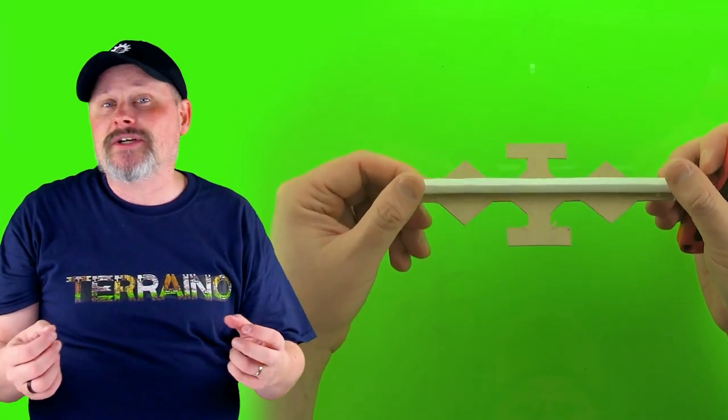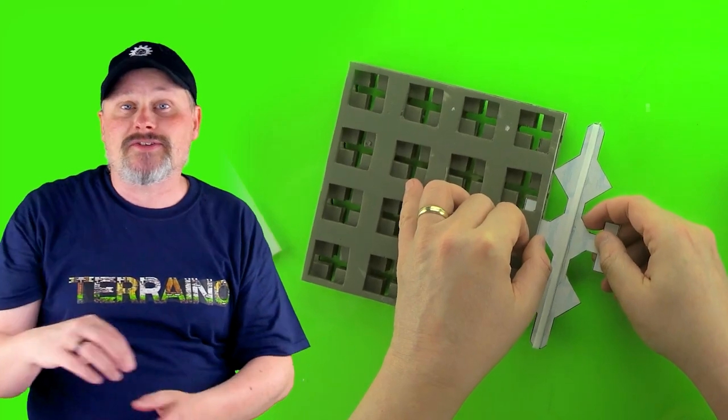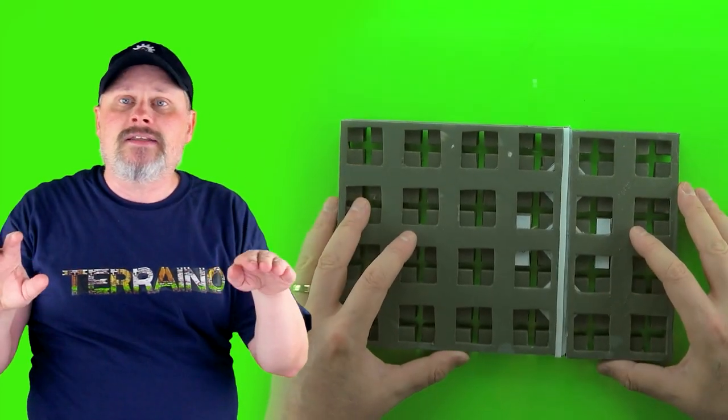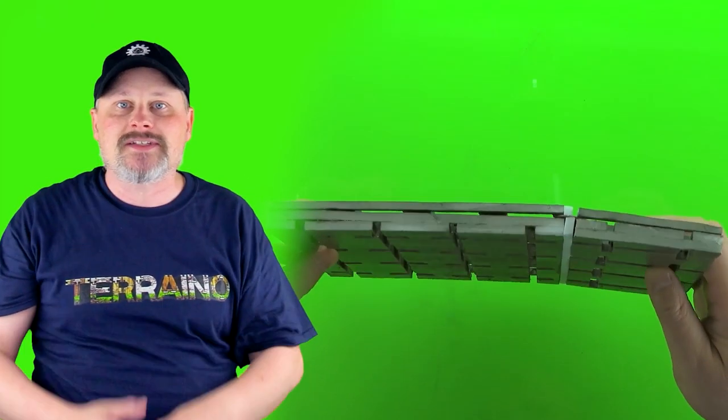Well, if you haven't guessed already, grid square connectors are to grid square bases what wall connectors are to walls. They slide in under that first layer in the grid square bases and are held in place by grid square plugs. So let's get started.